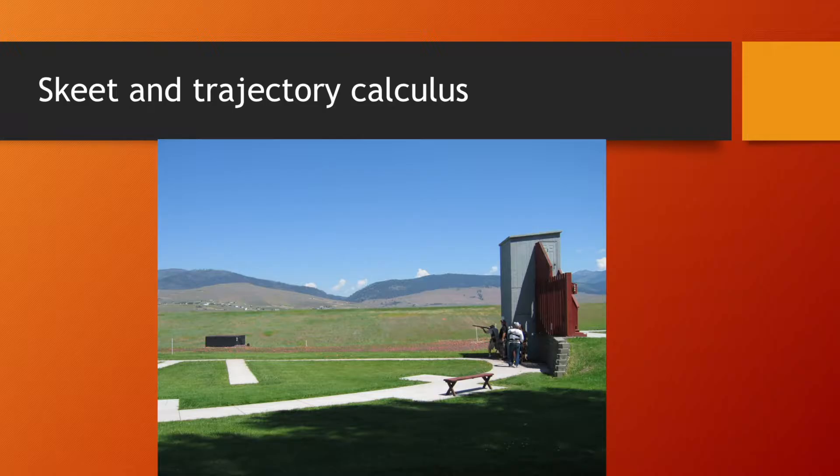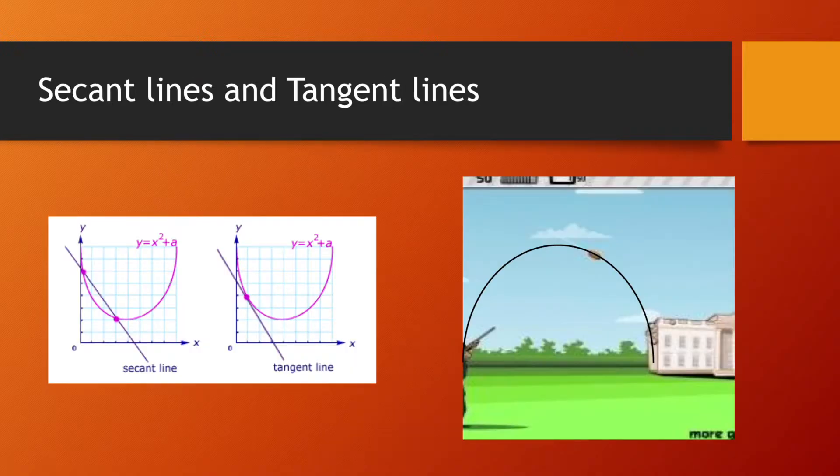Now, my project is going to be about the connection between skeet shooting and trajectory calculus. This trajectory calculus in this case means seeing where two different lines intersect or in this case two different functions.